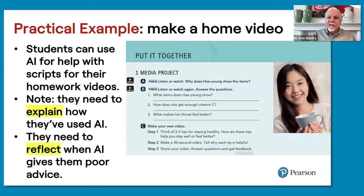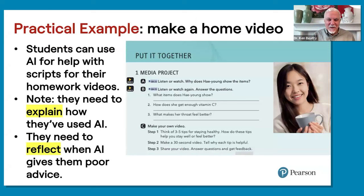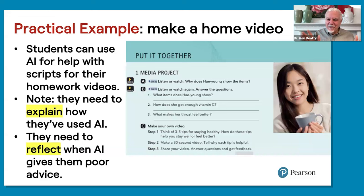What's a practical example? Make a home video. Students can use AI for help with scripts for their homework videos — this is a task in every unit of the first four books of the Startup series: create a little media project, either pictures or video. They could make a script by asking AI to help them write one about a personal topic. It's still personal, and I love that because it's a personal assignment, not just a general research task. They can also reflect on when AI gives them poor advice.